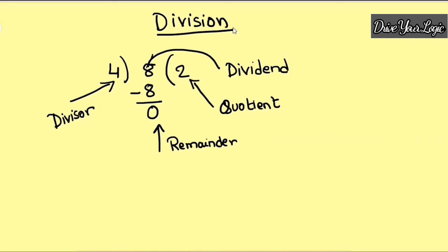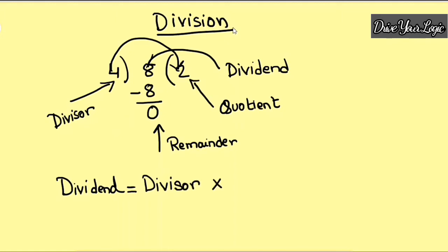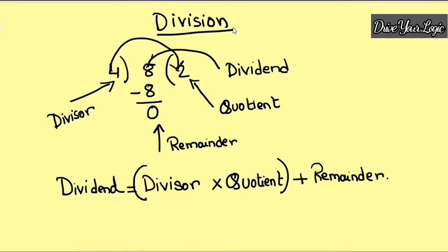In a very easy way you can check your answer — whether you have made a mistake or not. There is one short formula for that. What is that formula? Dividend equals divisor into quotient, plus remainder. So in this way you can easily check whether your answer is correct or not.